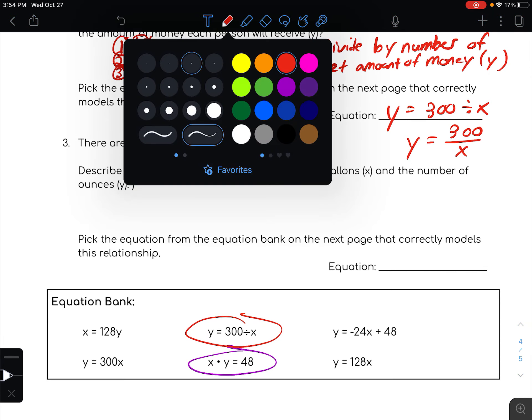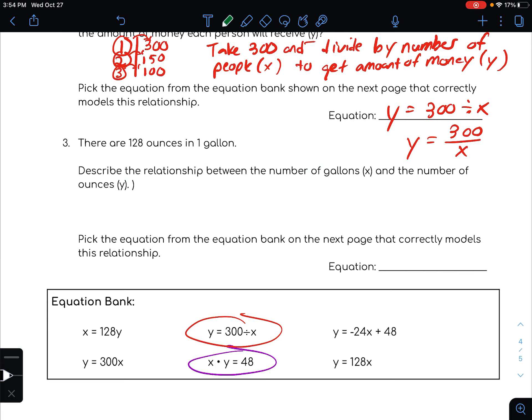All right, third situation. You might know there's 128 ounces in one gallon. If not, now you do. So describe the relationship between the number of gallons x and the number of ounces y.